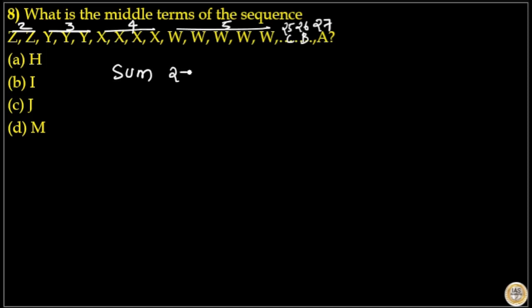First take the sum of 2 to 27. Sum is N into N plus 1 by 2. Here sum of 27 terms is 27 into 28 divided by 2. But here is sum of 2 to 27. 1 is absent here, so subtract 1 from it.